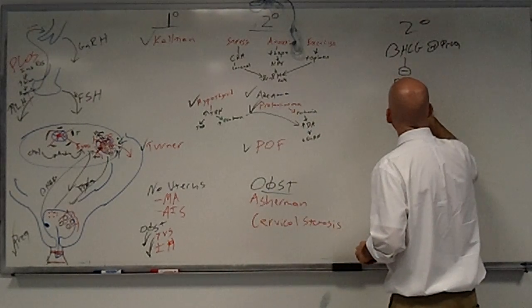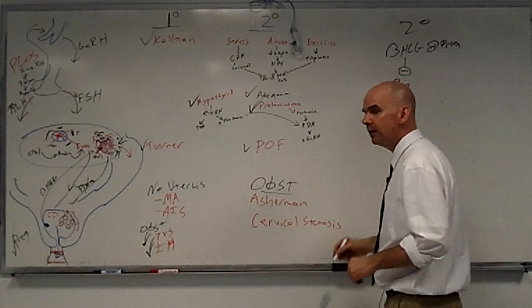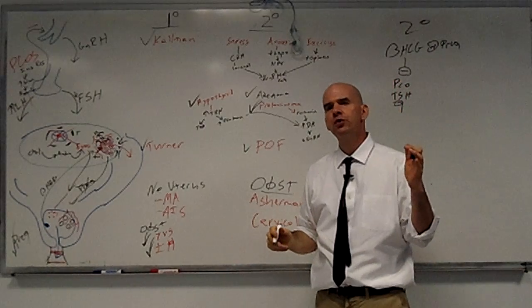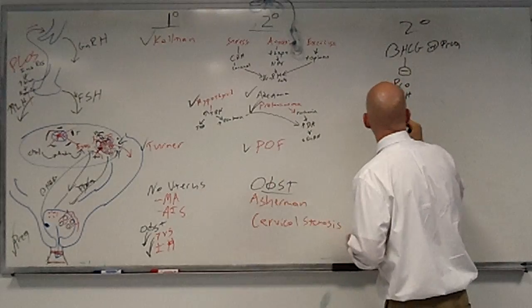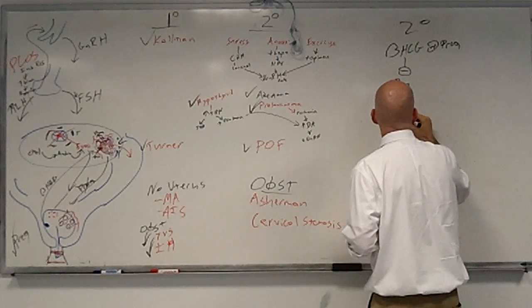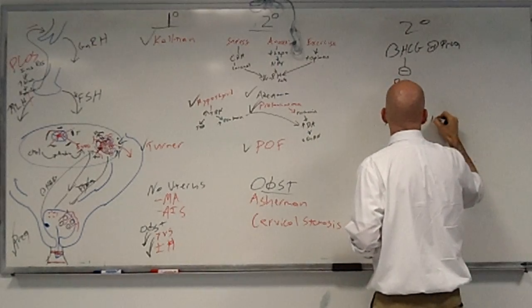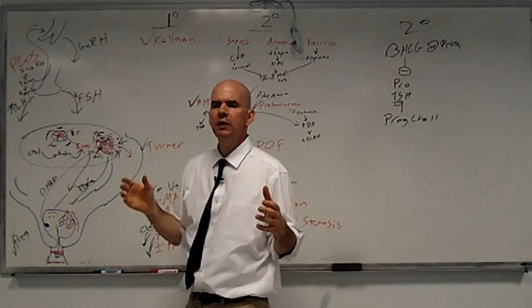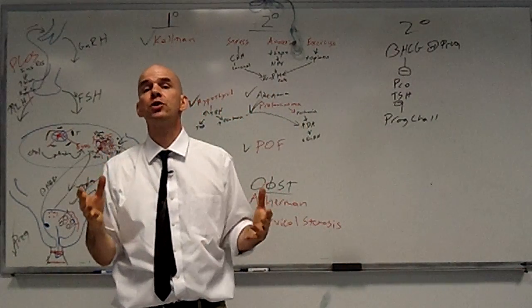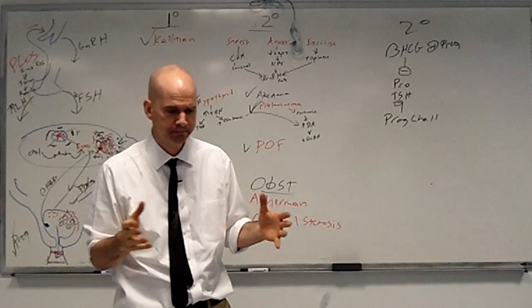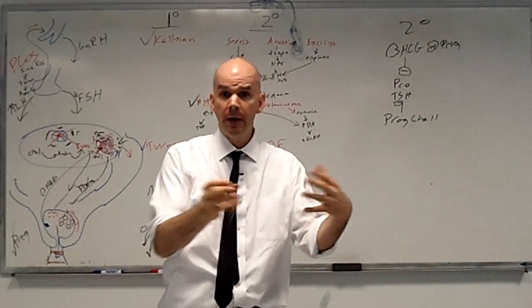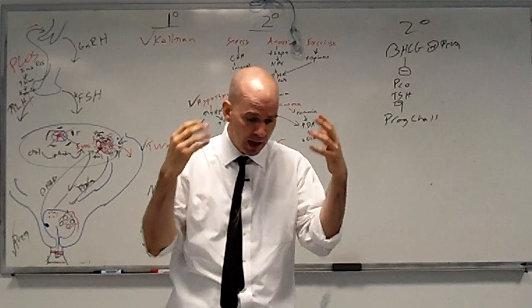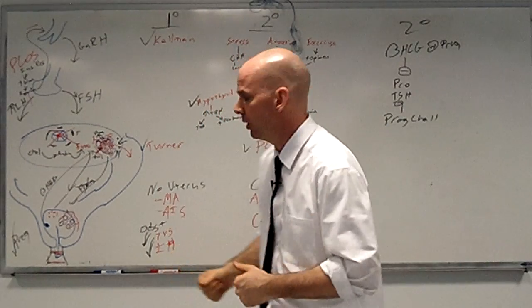If both TSH and prolactin are negative, then you're going to do something called a progestin challenge test. What this involves is giving a patient progesterone for seven days. And then withdrawing that progesterone and seeing if it generates a menstrual period.